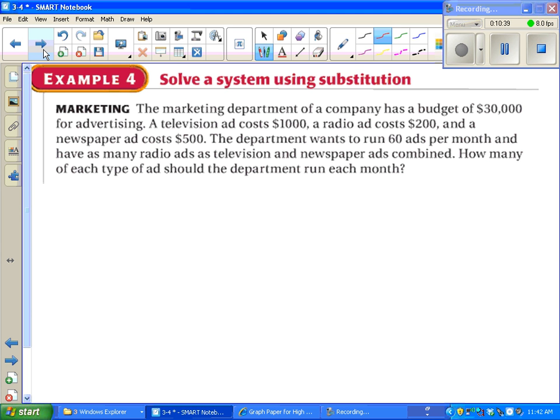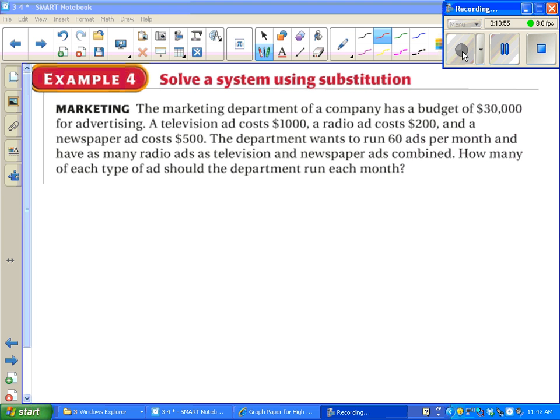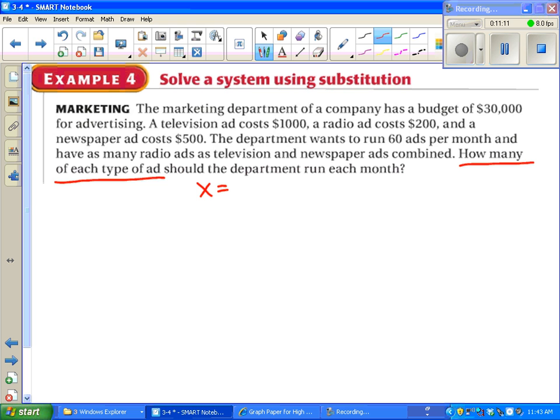Word problem. This is one word problem that I'm probably willing to say is scary because it takes something that everyone hates, a word problem, and combines it with some of the longest problems you'll ever do in this class. But we will persevere. Go ahead and pause the video and try to figure out what's going on. Looks like we need to find out how many of each type of ad we're going to run. So that's going to be mixed up with television ads, radio ads, and newspaper ads. So we've got to define variables for all three of those.